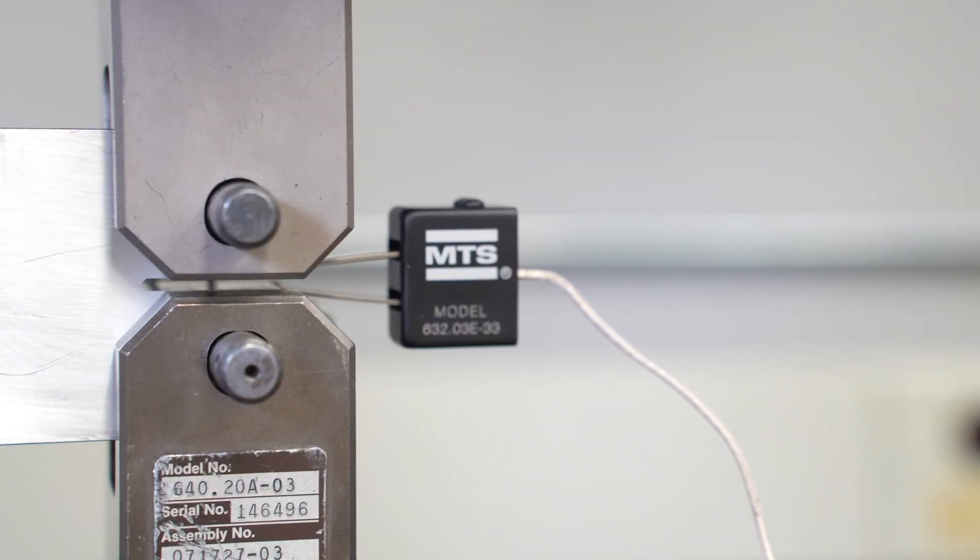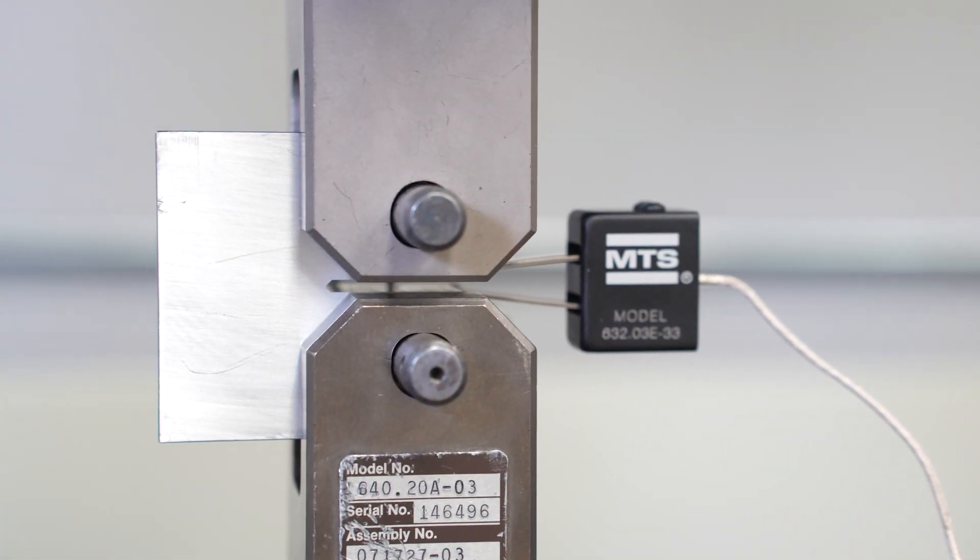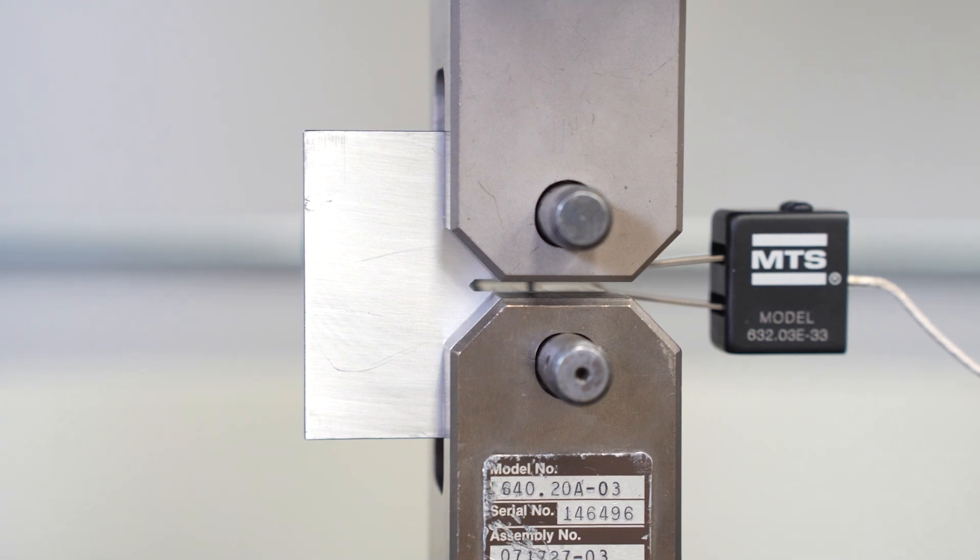Today we are running a K1C test in displacement control on aluminum 2024 T351. We are using a compliance crack length measurement technique to monitor the crack length during the pre-cracking and this pre-crack will end when the crack is approximately halfway through the specimen.